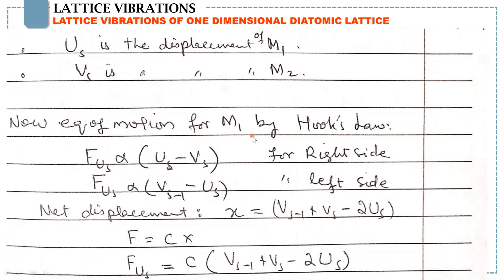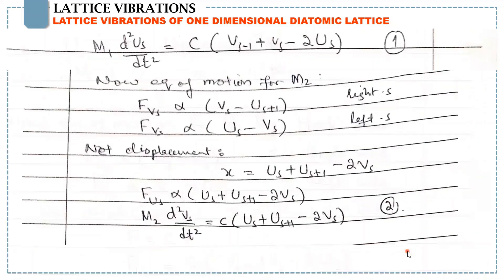Now the equation of motion for M1 using Hooke's law: force on U_S is proportional to (U_S minus V_S) for the right side, and for the left side force is proportional to (V_{S-1} minus U_S). Taking the net displacement, X equals V_{S-1} plus V_S minus 2U_S. Using Hooke's law F equals CX and Newton's second law, we get M1 times the second derivative of U_S with respect to time equals C times this expression. Let's call this equation number 1.